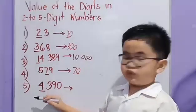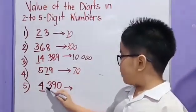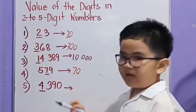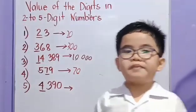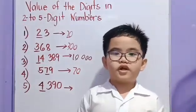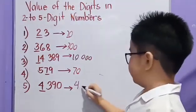Let us read 4,390. So, the place value of 4 is 4,000.